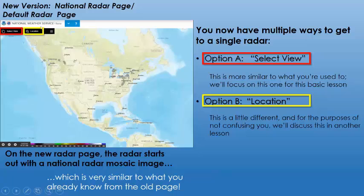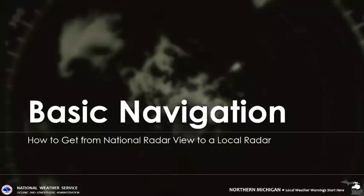The box in the yellow location is a little bit different, and for the purposes of not confusing you, we'll focus on that in part two. So again, how to get from national radar to local radar in a similar way to how you used to do it.